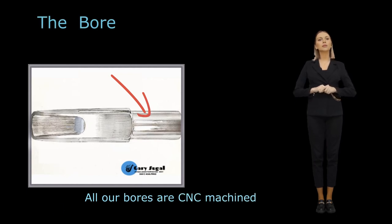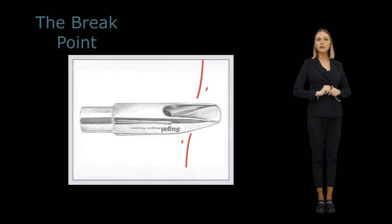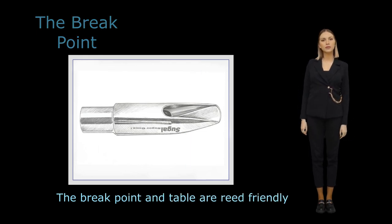The bore is located in the rear inner part of the mouthpiece that adheres to the saxophone's cork. The break point refers to the point where the reed first separates from the flat surface of the table, marking the beginning of the facing curve.